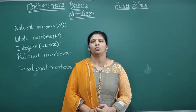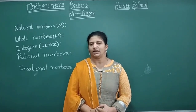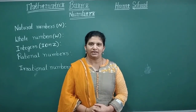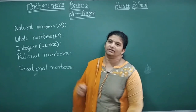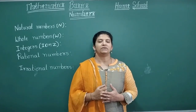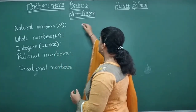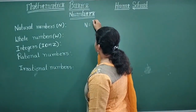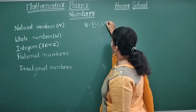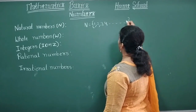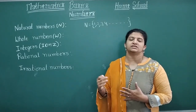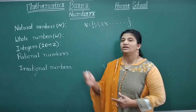All counting numbers are also called natural numbers. Natural numbers start with the number one — one is the least natural number. These natural numbers are represented by the capital letter N. N is the set: {1, 2, 3, 4, ...} and there is no end to this set.